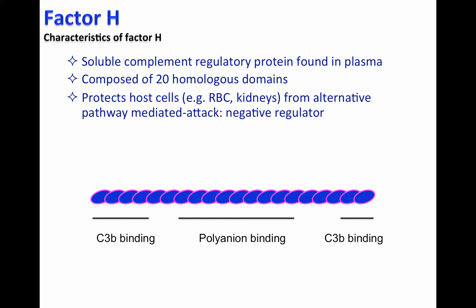Factor H protects host cells, such as red blood cells and kidneys, from alternative pathway-mediated attack. Factor H is considered the only negative regulator of the alternative pathway. Factor H has two main functions: decay accelerating activity and cofactor activity for Factor I, that will be reviewed in this video.